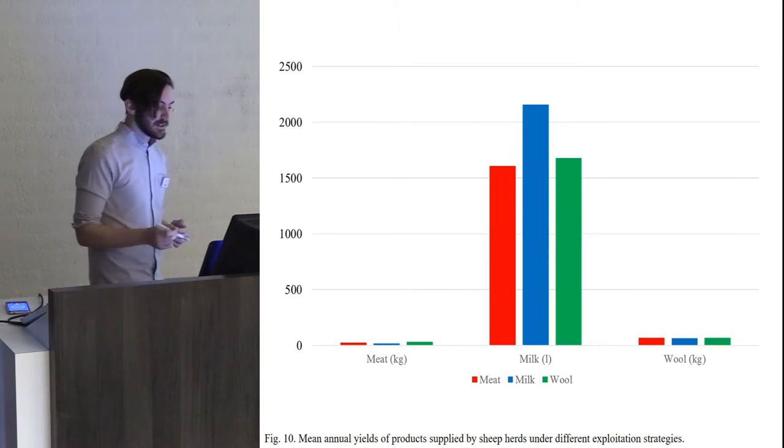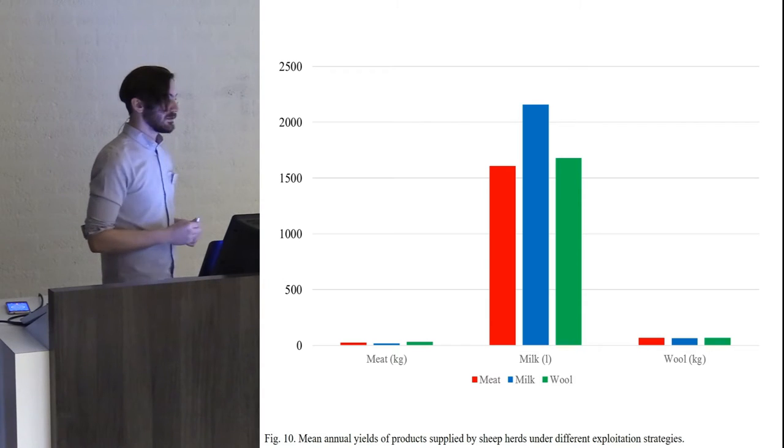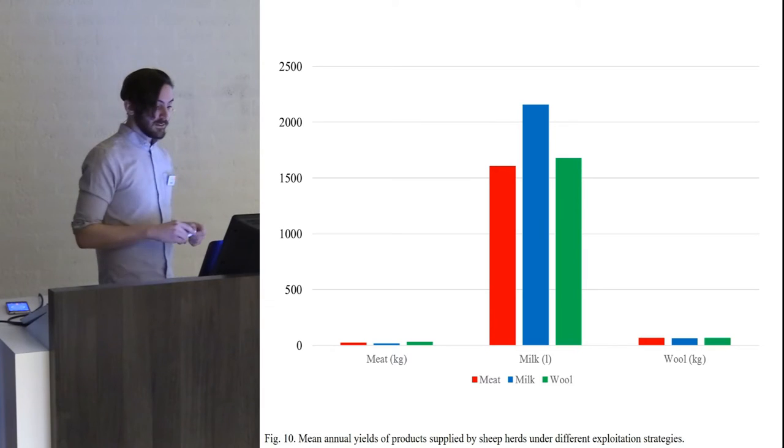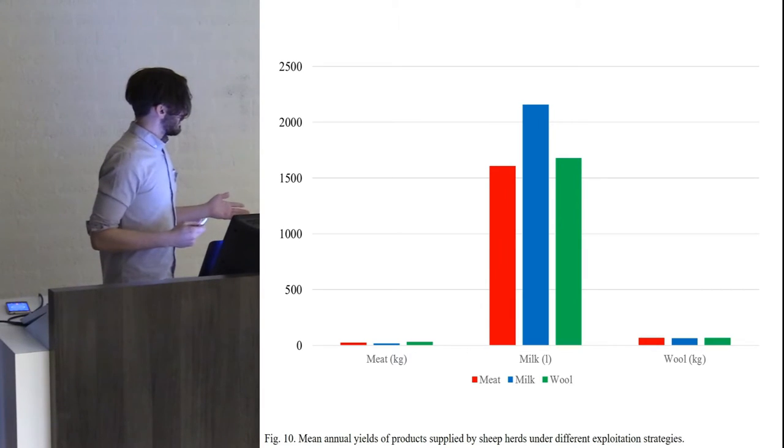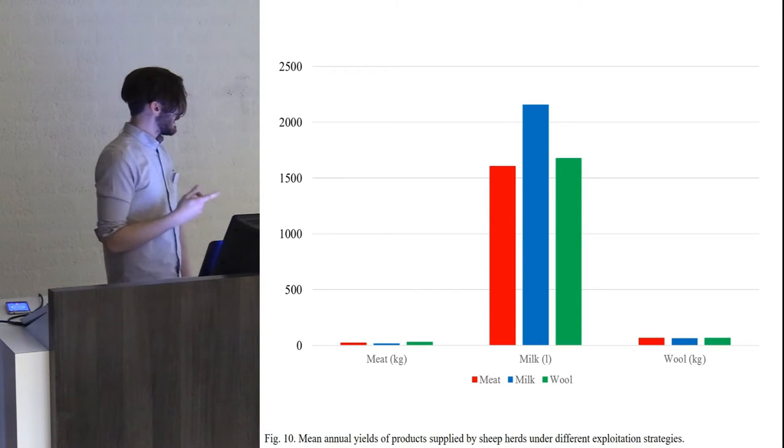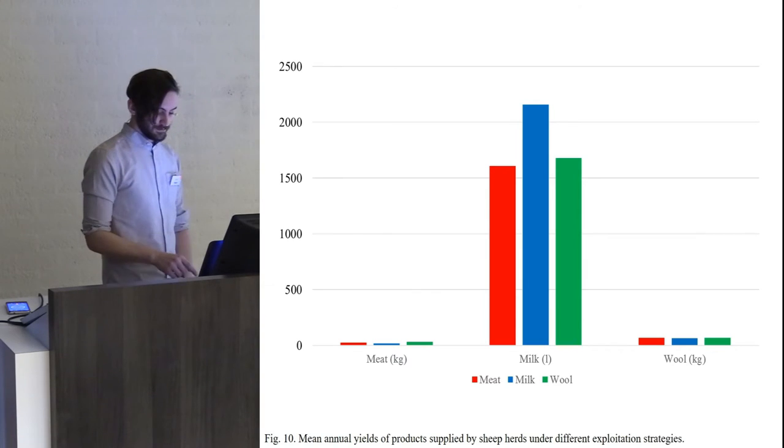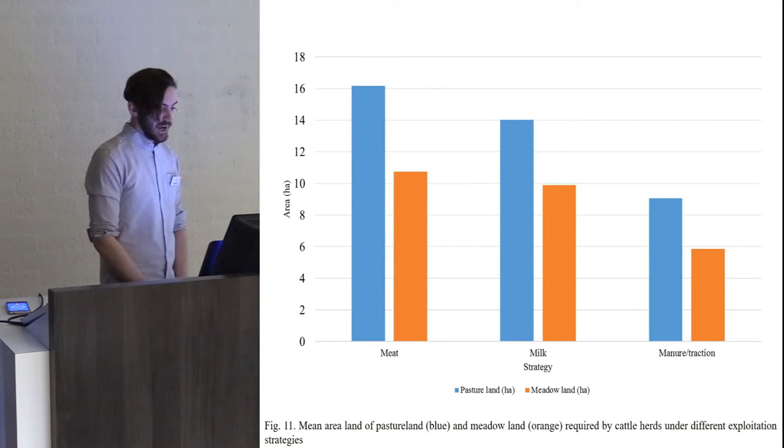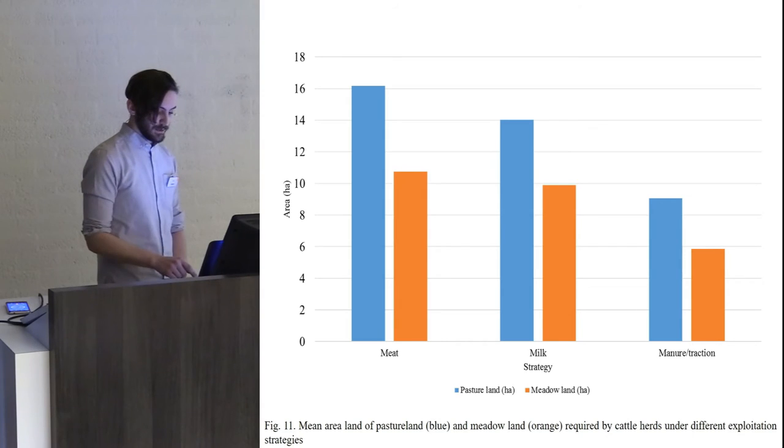In both cases, we've seen that the milk yields from herds are very high and these can produce quite a lot of calories, and this may have been an important product. Here we can see the average area of land for cattle - this is much higher than for sheep, shown here.